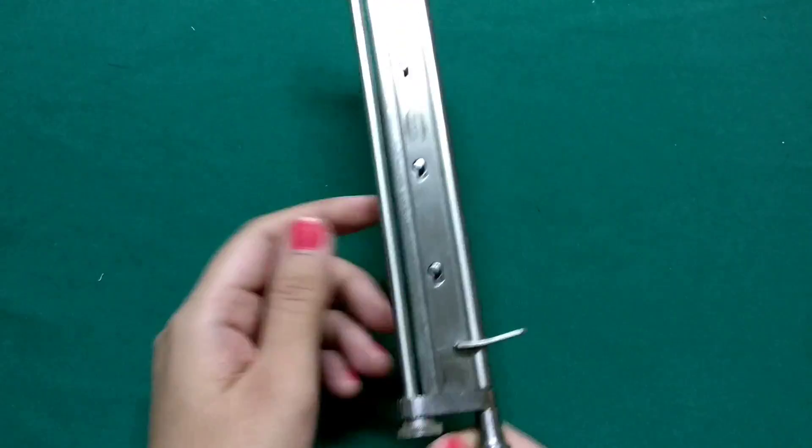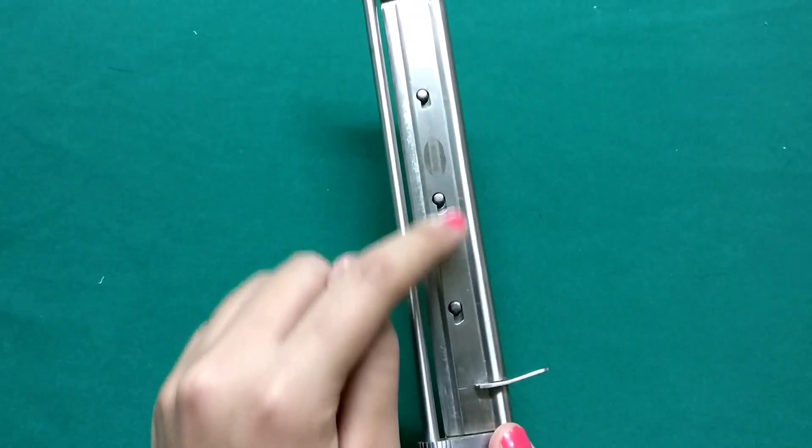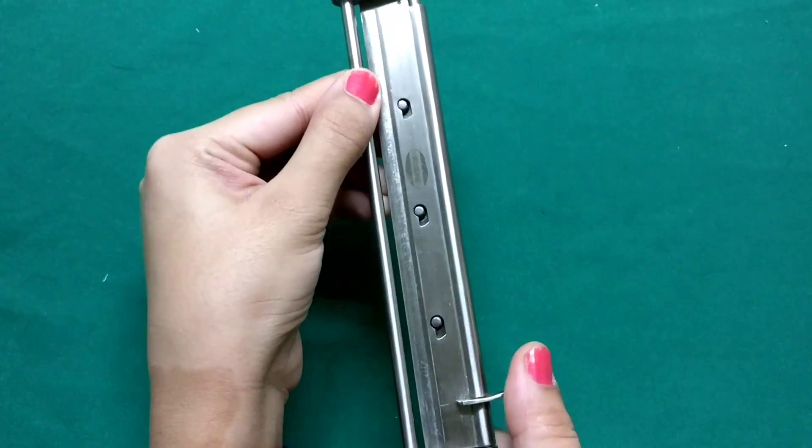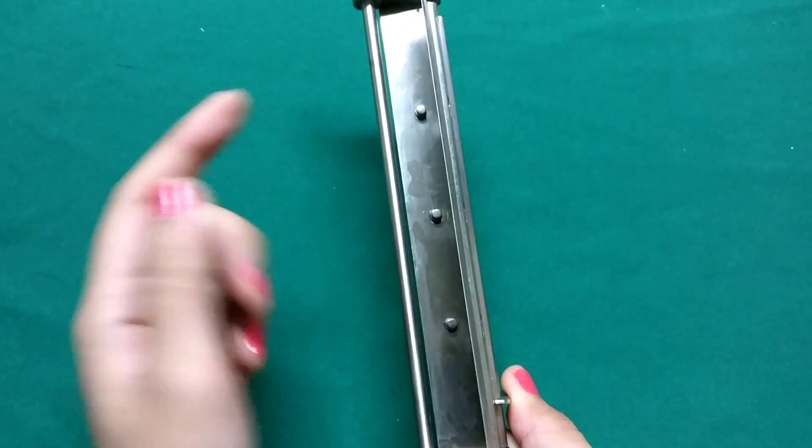So this is the way we hold a skin grafting handle. These are the openings from where we have to open this flap and this is how we introduce the blade.